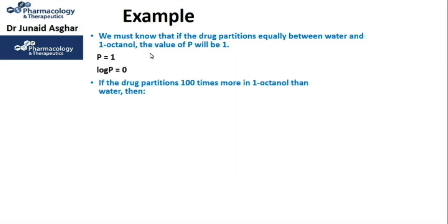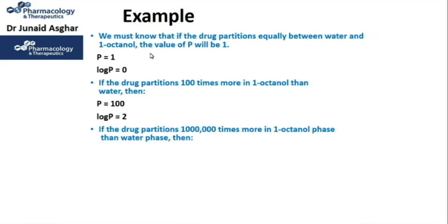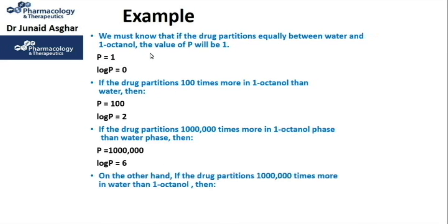If the drug partitions 100 times more in 1-octanol than water, P equals 100 and log P equals 2. If the drug partitions 1 million times more in the 1-octanol phase than the water phase, P equals 1,000,000 and log P equals 6. On the other hand, if the drug partitions 1 million times more in water than 1-octanol, P equals 1×10⁻⁶ and log P equals −6.